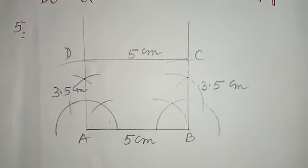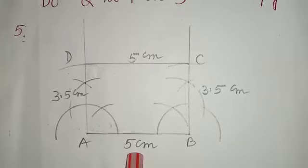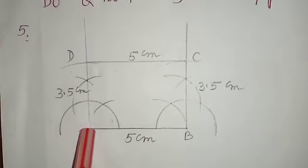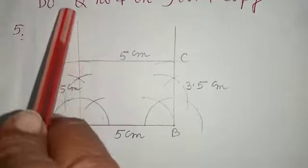How we will do question number 5: draw a line segment AB of 5 cm. At A we will draw an angle of 90 degrees.